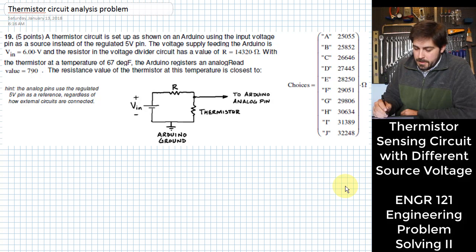So for this problem, we are given that we have a circuit that is connected instead of to the 5-volt reference pin or the 5-volt regulated voltage that's on the Arduino, it is connected to the input voltage, which is actually sitting at 6 volts, so that's this voltage right here. It is then connected through a 14,320-ohm resistor up here on the top labeled R, and then the current would flow down through the thermistor, which also functions as a resistor, but it is a variable resistor that changes with temperature, and then goes around back to ground.